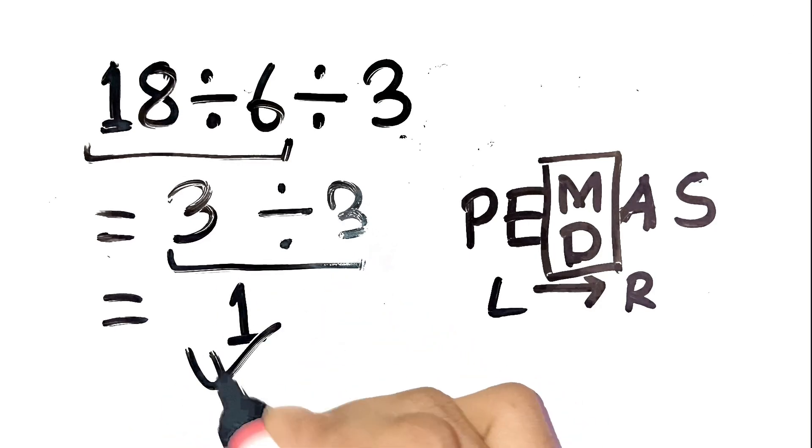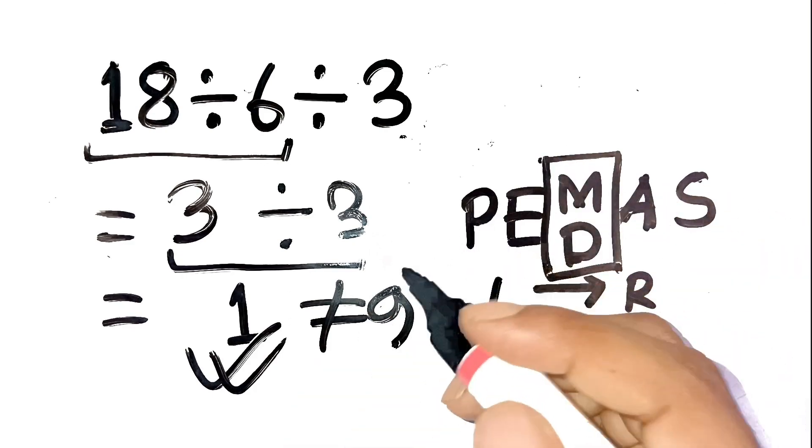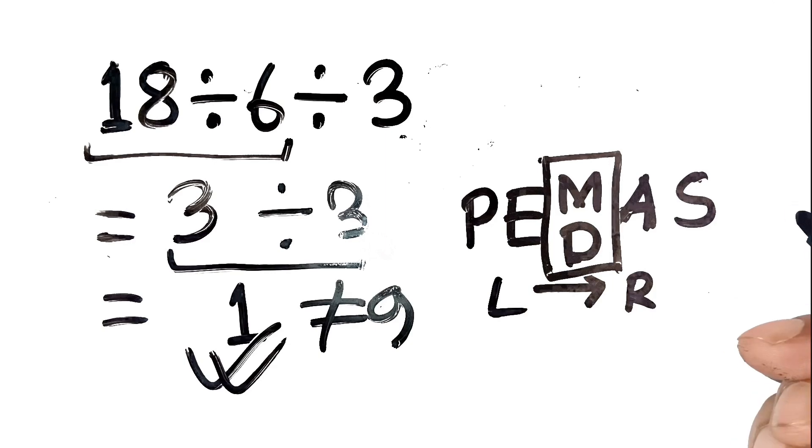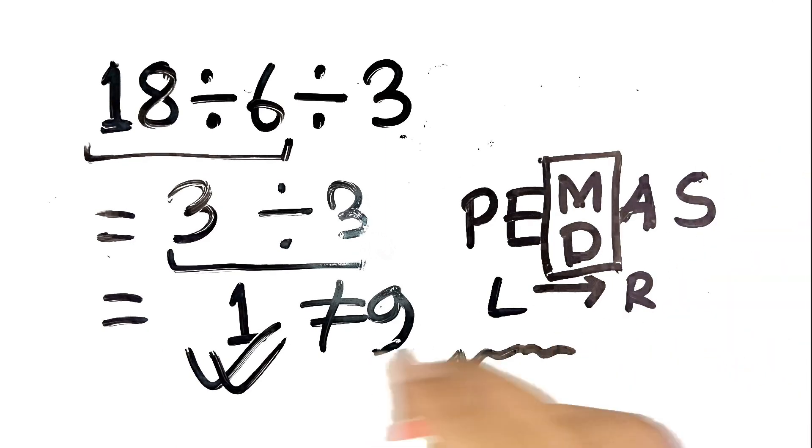So the correct answer is 1, not 9. See how following the left to right rule completely changes the outcome. If you have any valid arguments or want to show a different method, write it down in the comments. Thanks for watching.